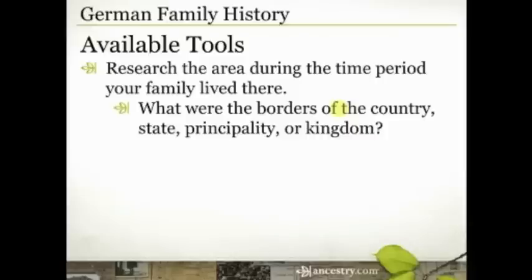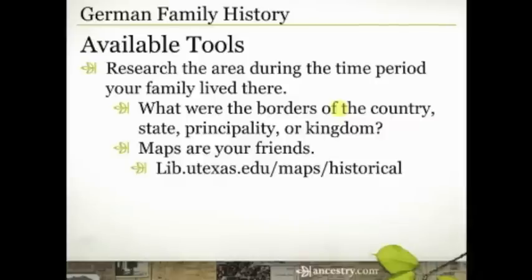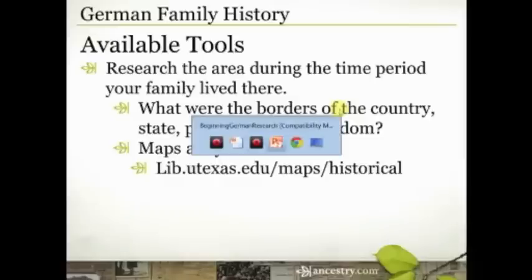The bigger issue is not just about the history of the area but the borders. The internal and external borders of Germany have changed a lot. And so where your ancestors lived — what were the borders at the time of the country, the state, the kingdom that they lived in? Maps are your friends, and there is an excellent collection of historical maps provided by the University of Texas. The URL is lib.utexas.edu/maps/historical. If you go there, you'll find they have this amazing, incredible collection of historical maps from all over the world, different places, different time periods. I'll actually show it to you here so that you know what you're getting into. This is what the page is going to look like when you come there, and you're probably going to want to select historical maps of Europe.